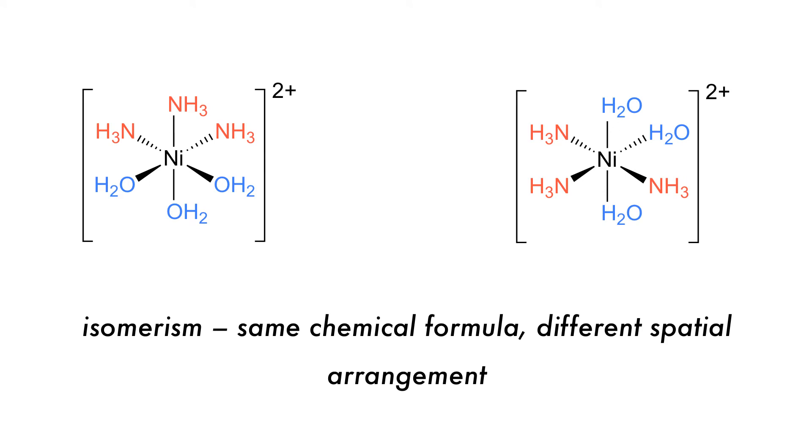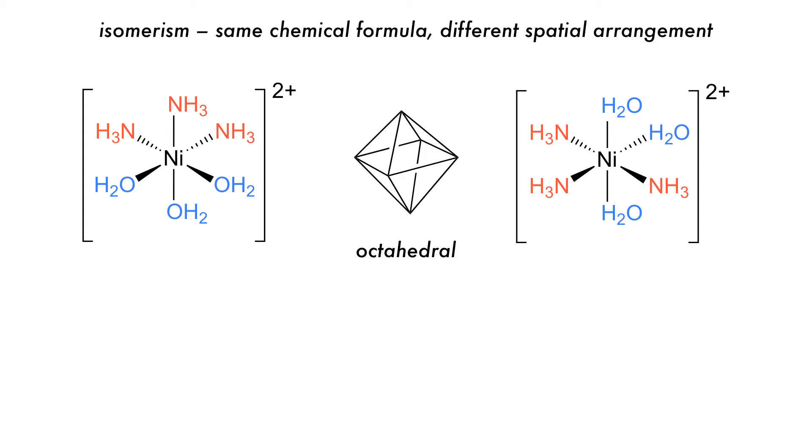This is referred to as isomerism, and both complexes here, with the same chemical formula, are isomers of each other. Remember that both of these complexes have an octahedral geometry, but the spatial arrangement of their ligands differ.